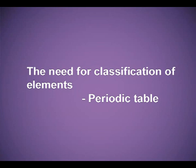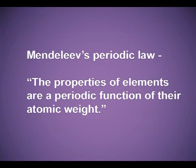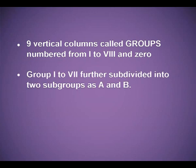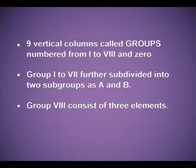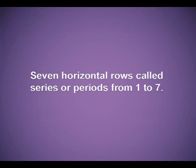Let me give you a quick recapitulation. The need for the classification of elements led to the formation of the modern periodic table. The earlier attempts were based on atomic weights — Döbereiner's Triads and Newlands' Law of Octaves. The remarkable attempt by Mendeleev: he gave the Mendeleev Periodic Law — the properties of elements are a periodic function of their atomic weight. The Mendeleev Periodic Table had nine vertical columns (groups 1 to 8 and 0), groups 1 to 7 subdivided into subgroups A and B, group 8 with three elements, and group 0 for inert gases not yet discovered. Seven horizontal rows called series or periods, numbered 1 to 7.